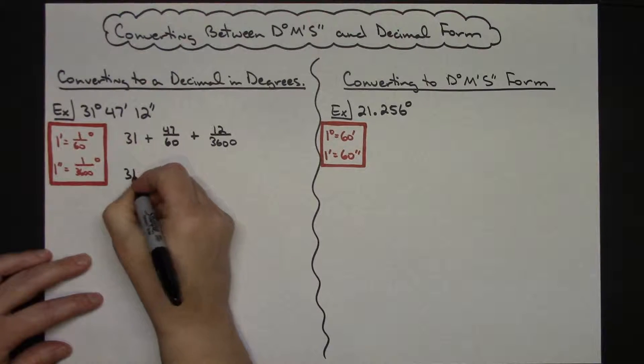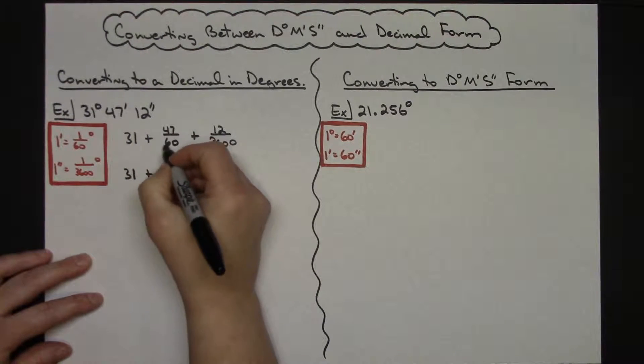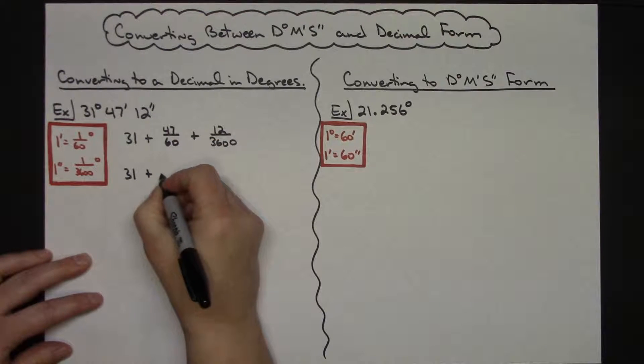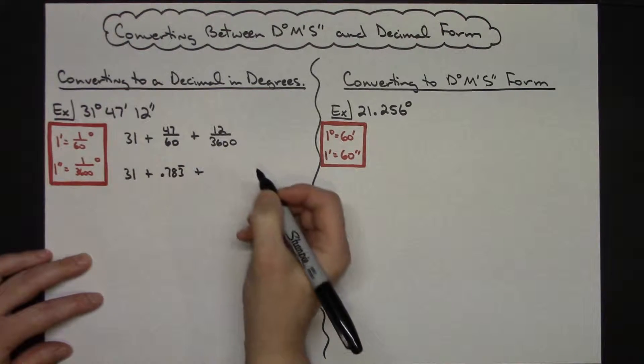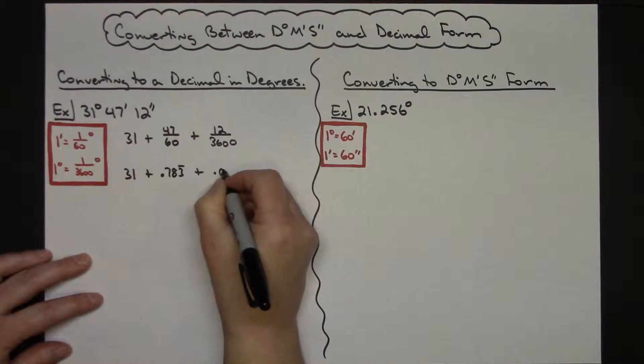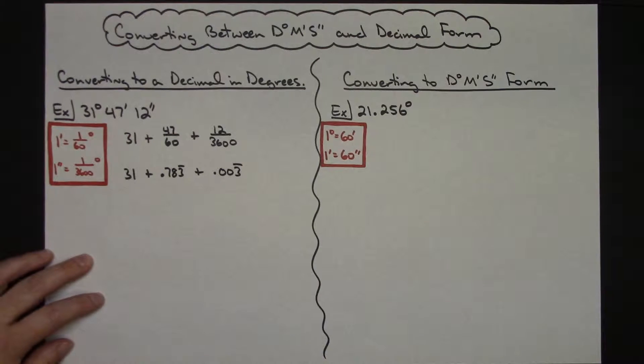If you want to see it written out individually, the 31 stays 31, converting this into a decimal is 0.783 and it is repeating, and converting this fraction into a decimal I get 0.003 again repeating.